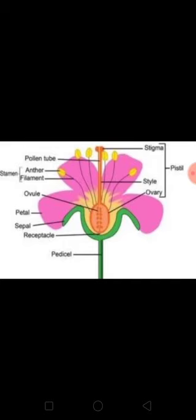Now, the next topic is parts of a flower. All flowers grow from buds. Buds, after opening, change into flowers. A flower has four main parts: sepals, petals, stamen and pistil. You can see a flower and its parts. The pedicel is the part of the flower that attaches the flower to the stem. Sepals are the green leaf-like structures which protect the flower when it is a bud. Petals are the colorful central part of a flower.